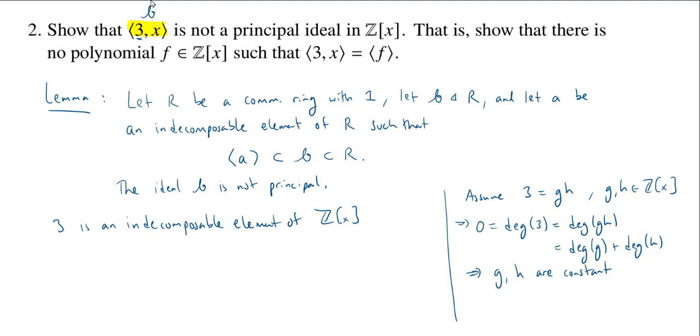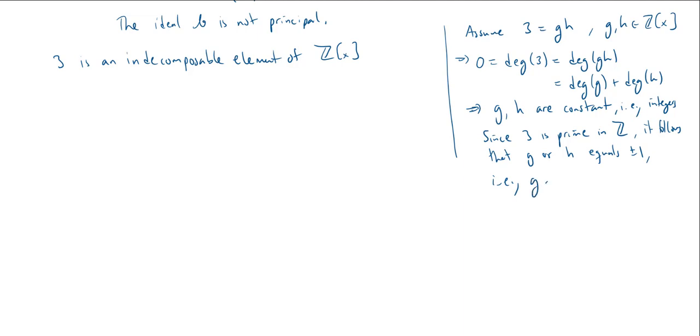But that means they're just integers. Well, how do you decompose 3 as a product of integers? And the answer is, well, 3 is prime, so you know that one of them has to be a unit. So since 3 is prime in the integers, it follows that G or H equals plus or minus 1, i.e., G or H is a unit. So that tells us one of the factors has to be a unit, and so 3 is indecomposable.